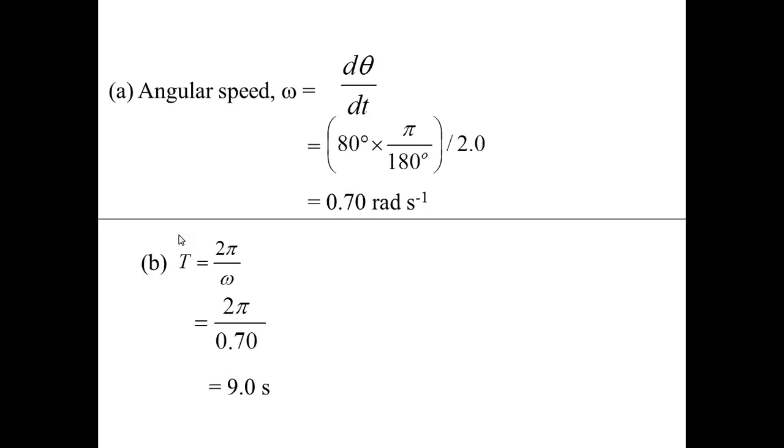In part B, you are asked to find the period time. So we make use of the equation omega equals 2 pi over T. So make T the subject; the answer is 9 seconds.